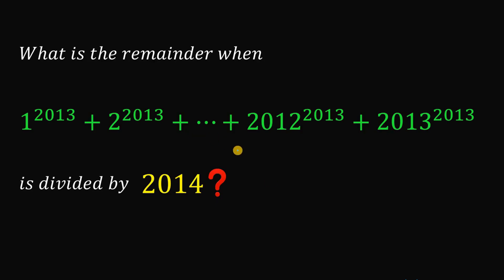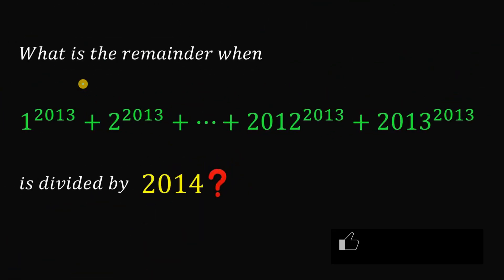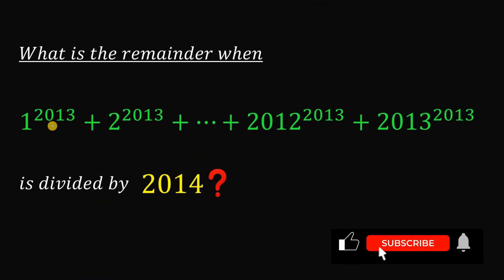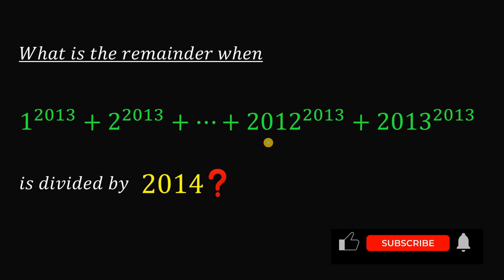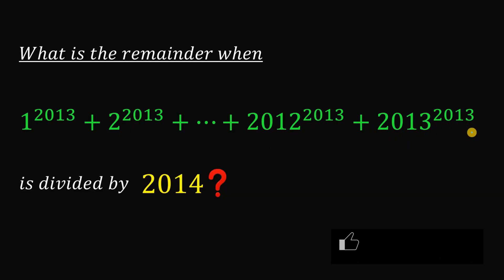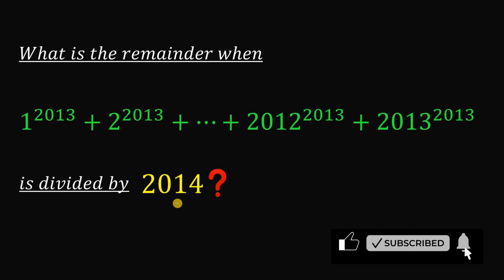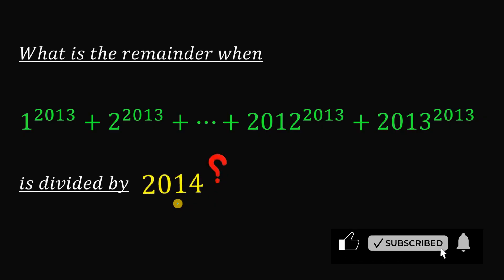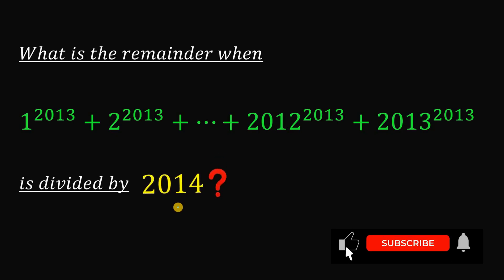Today we will answer an algebra challenge given by one of our followers. The question goes like this: what is the remainder when 1 raised to the power of 2013 plus 2 raised to the power of 2013, all the way down to 2013 raised to the power of 2013, is divided by 2014? Pause this video and see if you can answer this question, because I will show you the answer and solution in three, two, one.